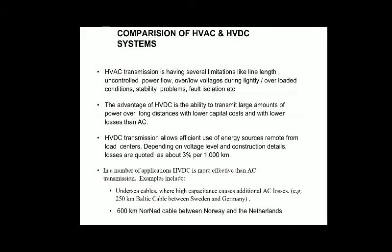Here is a comparison between HVAC and HVDC systems. HVAC transmission has several limitations like line length, uncontrolled power flow, over or low voltages during lightly or overloaded conditions, stability problems, and fault isolation issues. The advantage of HVDC is the ability to transmit large amounts of power over long distances with lower capital cost and lower losses than AC. Losses are quoted as about 3% per 1000 km.